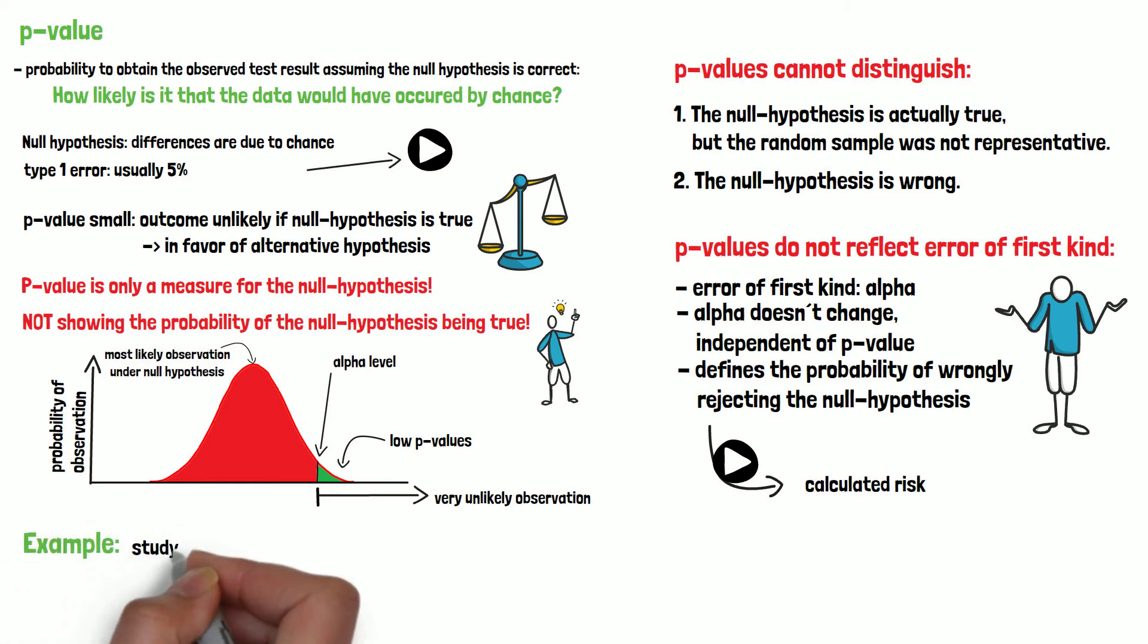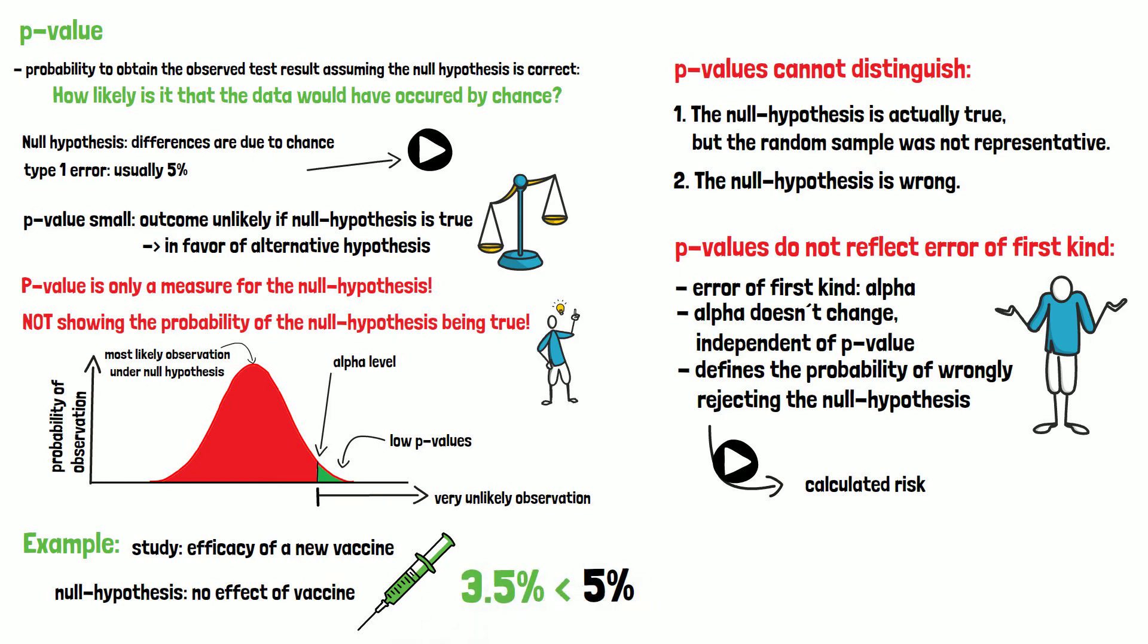Let's look at an example. We want to conduct a study where the efficacy of a new vaccine shall be investigated. We conduct a statistical test with a null hypothesis stating that there is no effect of the vaccine. The alpha is defined as 5%.